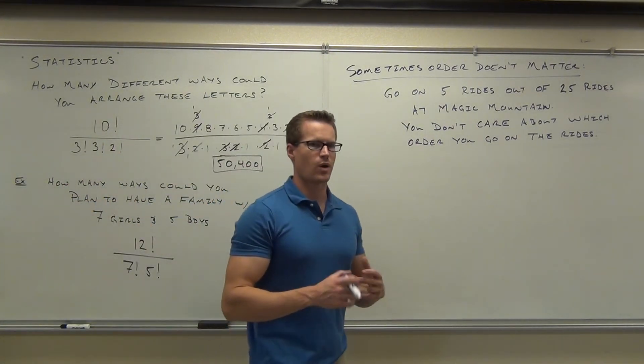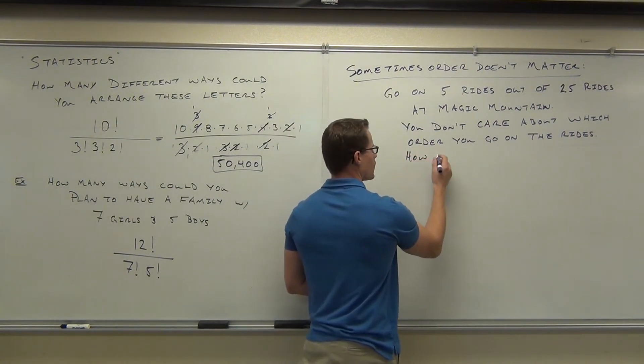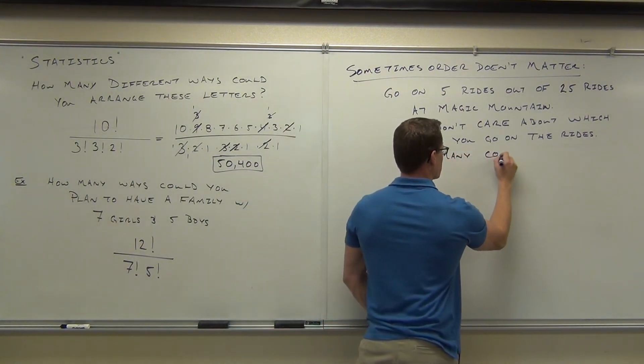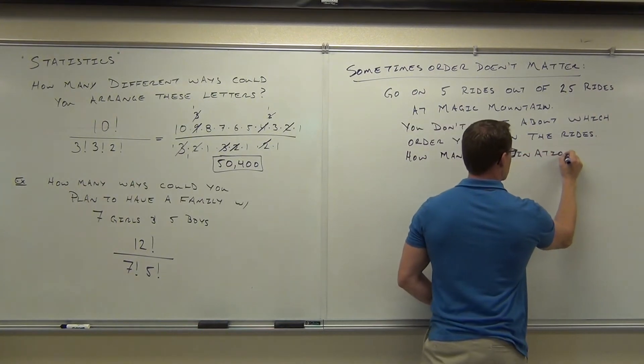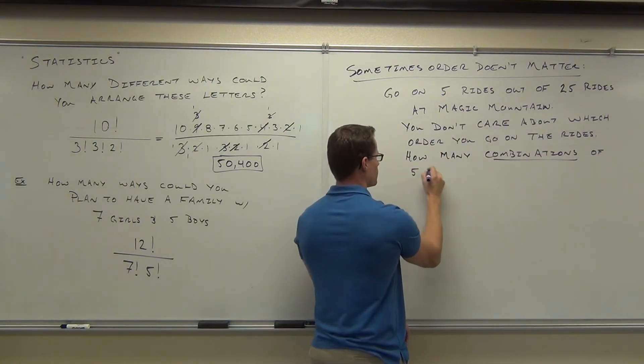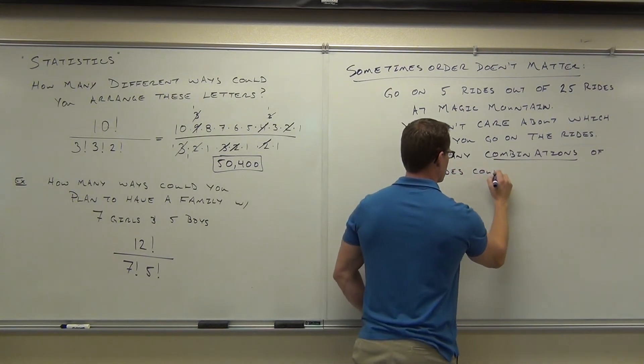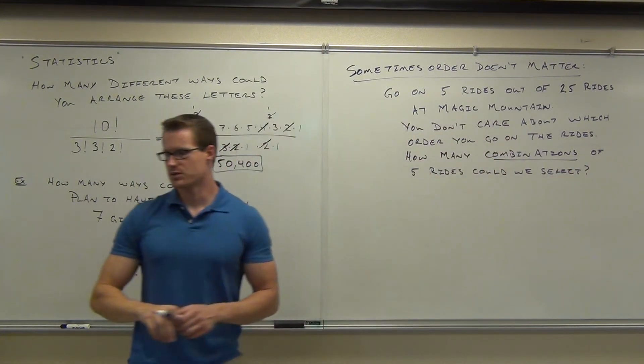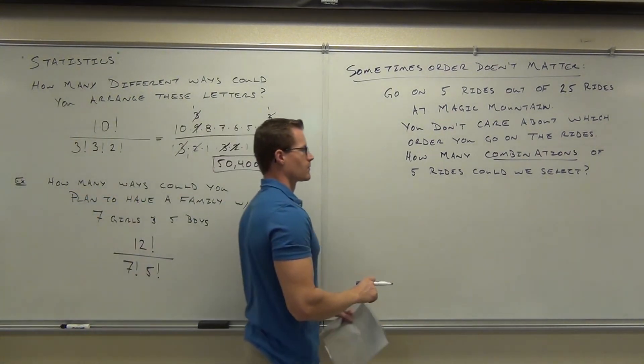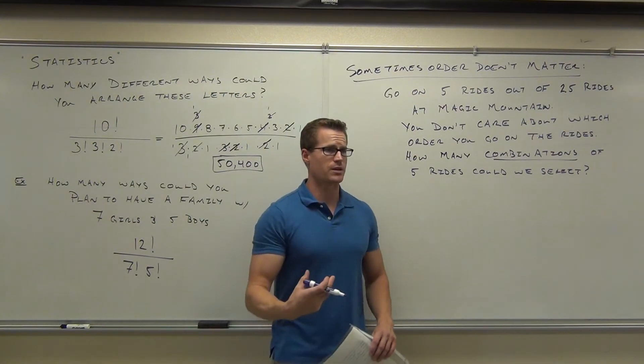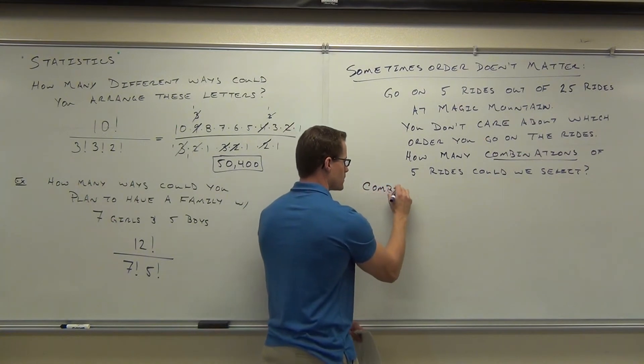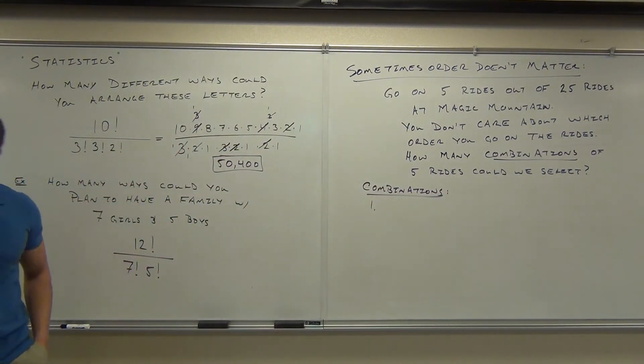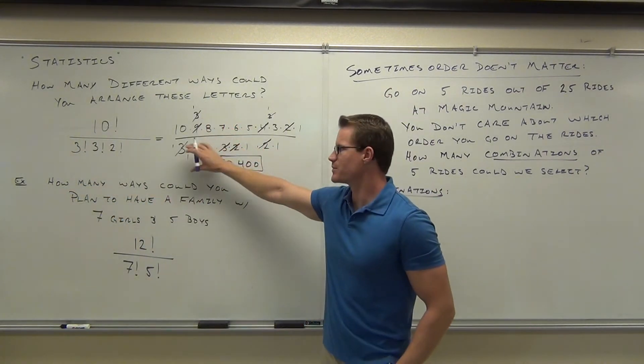So, the question is, how many ways could we ride five rides? Or how many combinations of five rides could we select? Combination means I really don't care the order. What I care about is that we just pick the five rides. There are some rules for combinations. First rule, first thing you've got to have, again, you have to have N different items. Because we found out if we have non-distinct items, things change up a bit.